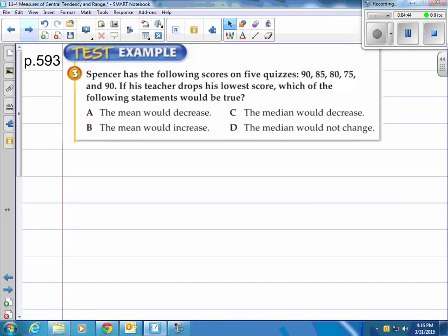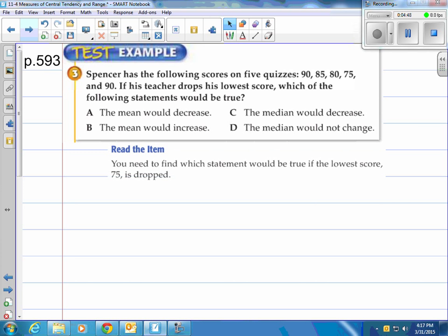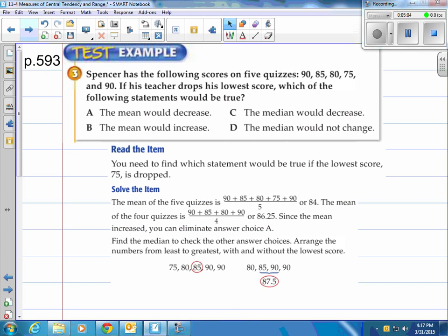Well, the way we've got to do this is we're actually gonna have to calculate these things and then do them two different ways. We can calculate with the 75 in there, and then take the 75 out and recalculate. So, you need to find which statement would be true when you drop off that 75. Well, let's solve it here. The mean of the five quizzes is 84. The mean of four quizzes after dropping off the 75 is 86.25. Since the mean increased, you can eliminate answer A.